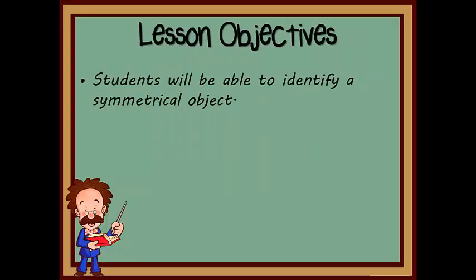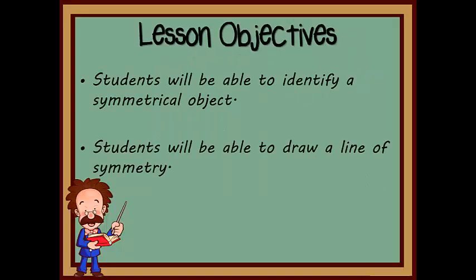First we have our lesson objectives. By the end of this lesson students will be able to identify a symmetrical object and draw a line of symmetry.